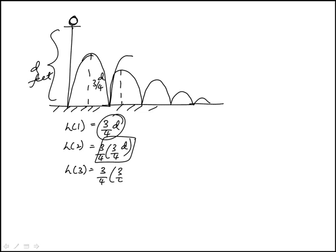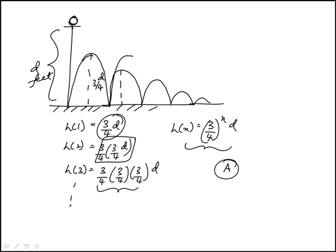We'll notice that we'll have powers of three-fourths, so you can see that the nth bounce will have three-fourths to the power of n times d. So that's the function we're looking for, and that is the same as answer choice A.